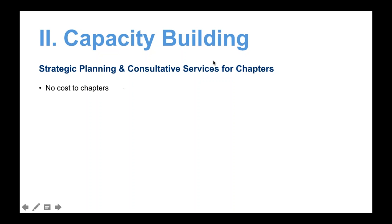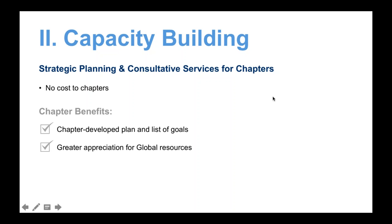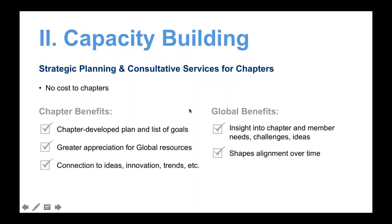Moving along to section two — capacity building. The chapters are the frontline providers of service to our members and customers, and we serve 90,000 people a year with 1,200 events annually. Our goal early on was to find ways to improve the performance of chapters and their ability to serve members, do a better job representing the brand, and grow the organization. We did that by growing the professionals of our chapter executives, growing the strategic capabilities of chapter boards, and providing them with services they need to better address the changing needs of our members.